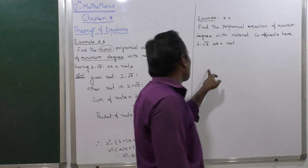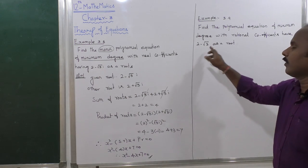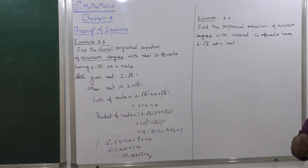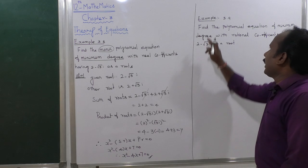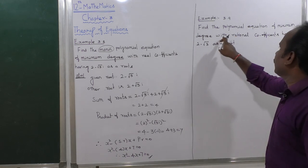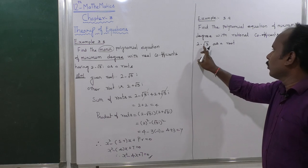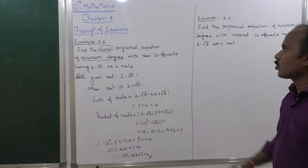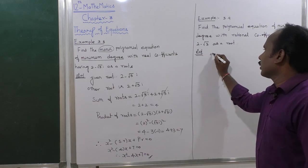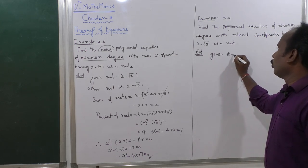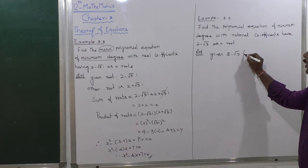The same process applies for the next part, but now the given root is an irrational number. An irrational number is one that has no terminal and no repeating decimal. The problem asks: find the polynomial equation of minimum degree with rational coefficients having 2 minus root 3 as a root. So the given root is 2 minus root 3.